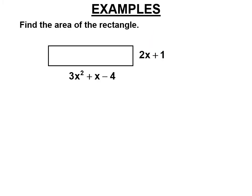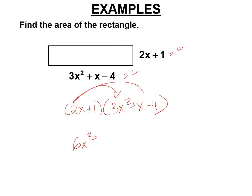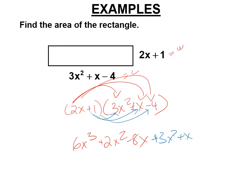Area is length times width — let's say that's the width and that's the length, and you multiply the two sides. When you write this out, you have to use parentheses. 2x times 3x squared is 6x cubed, 2x times x is 2x squared, 2x times negative 4 is negative 8x. Then plus 3x squared plus x minus 4. Combining like terms: 2x squared plus 3x squared is 5x squared, negative 8x plus x is negative 7x, minus 4.